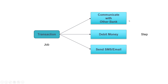Step one will get executed first, then step two, and after that step three will get executed. So in SpringBatch, it's all about job and step. A job can have multiple steps, but it is not necessary — it depends on your requirements. If you just have one task that can be completed within one step, that's fine. A job can have a single step as well. It's up to you how you want to design your job and steps.